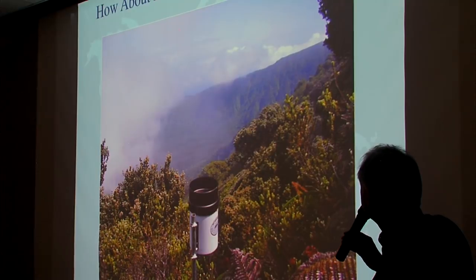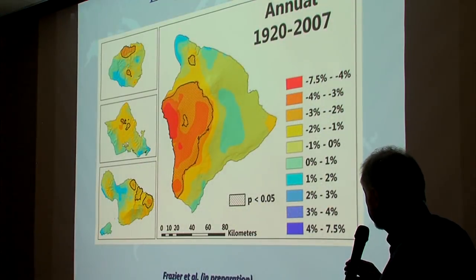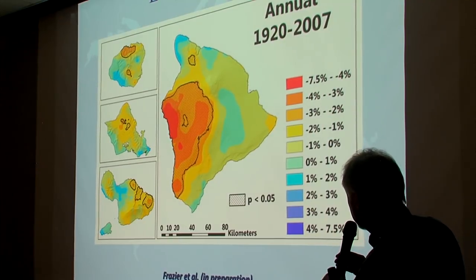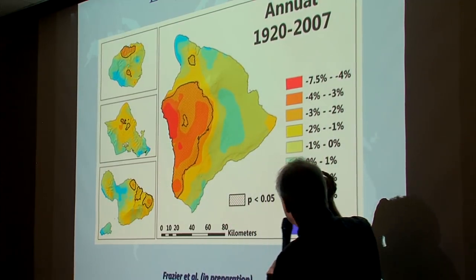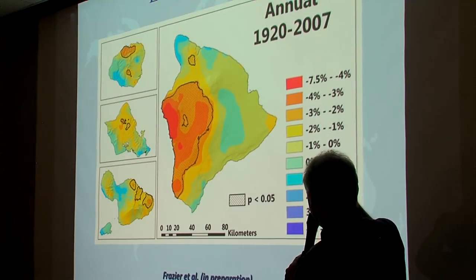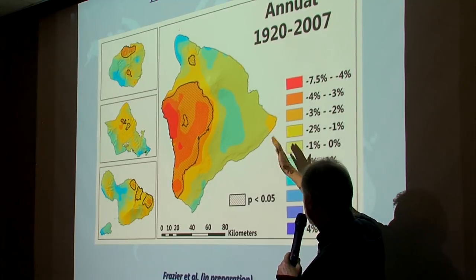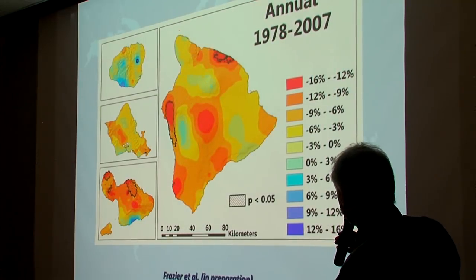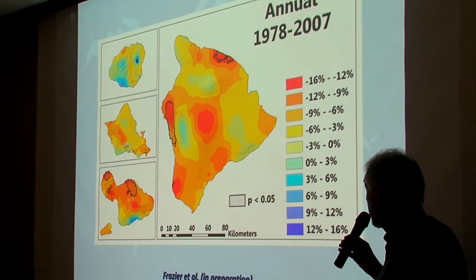What about precipitation change in Hawaii? Based on observations from 1920 to 2007, there is a drying trend for the most part on the leeward side of the Big Island. Nowhere is it really getting wetter, though the windward side seems to be staying about the same. Looking at the trend just from 1978 to 2007, you see more of a drying trend.